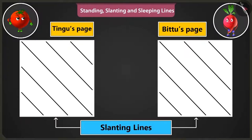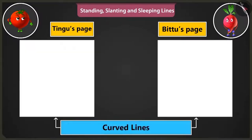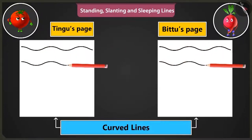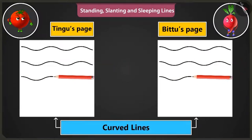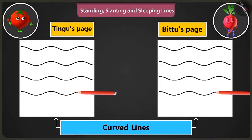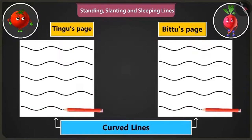Well done, Bittu. Now let us practice making curved lines. To practice, we have to start drawing lines from the left side of the page to the right side of the page. This is the way to make curved lines. Hey, this looks like waves of the sea.